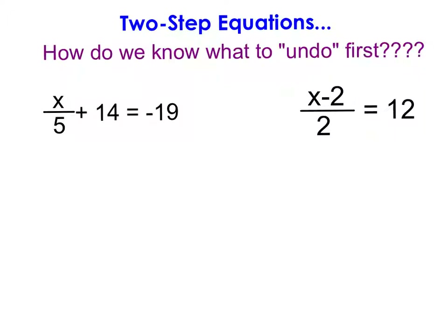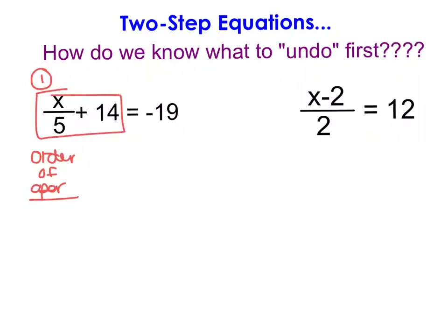Here we have two more examples. Let's focus on this first one. We're always undoing the order of operations backwards, so I'm going to start by focusing on the side with the variable. Looking there, I can see operations of division and addition, and I know that the division by 5 would come first, and then I would add 14 if I knew what x was.